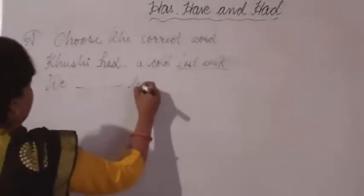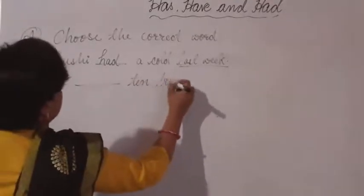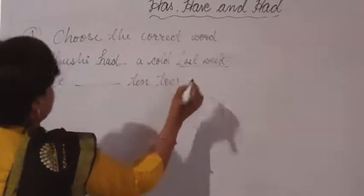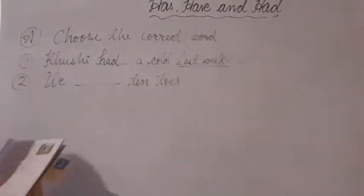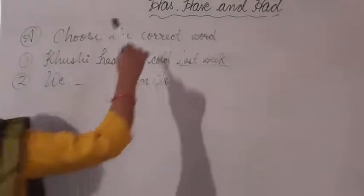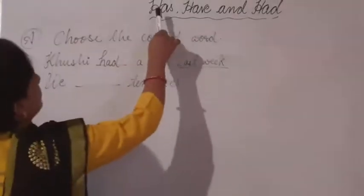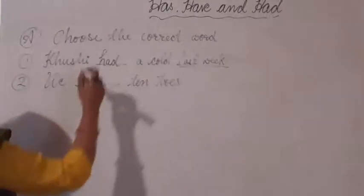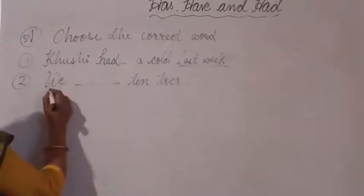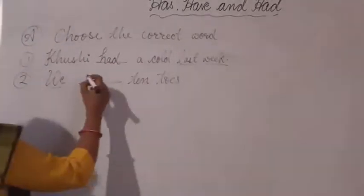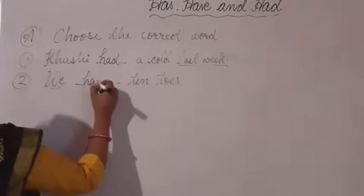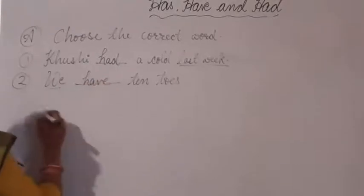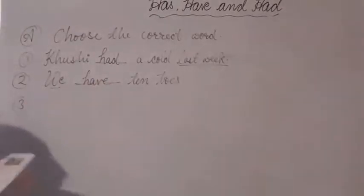Second: 'We have ten toes.' There is no past action here, so we choose from has or have. We is plural, so we choose have. We have ten toes.